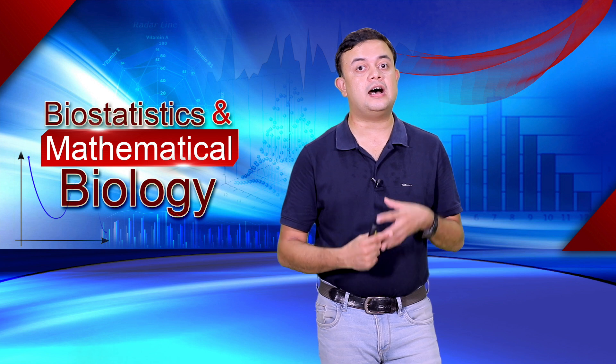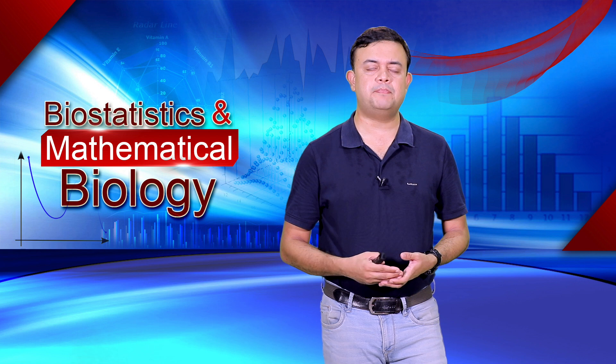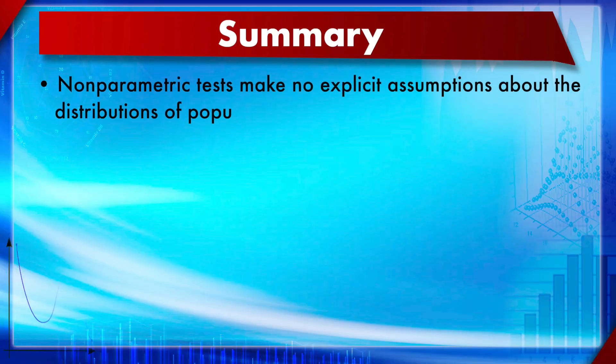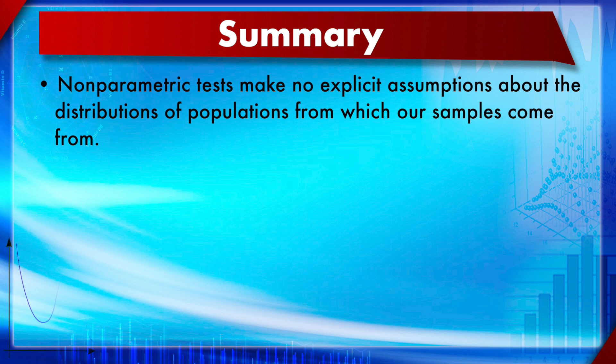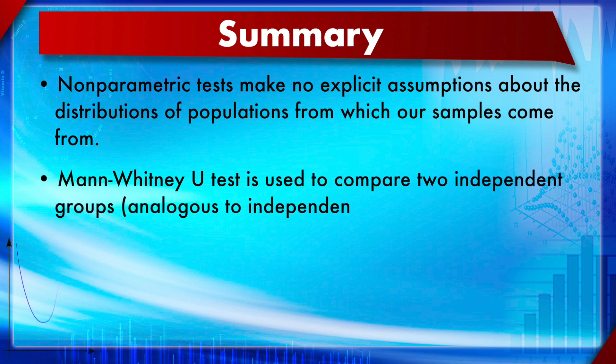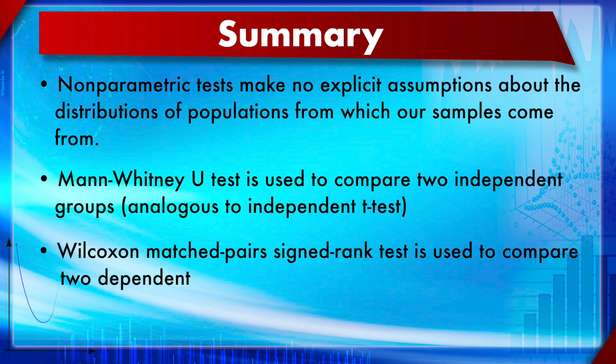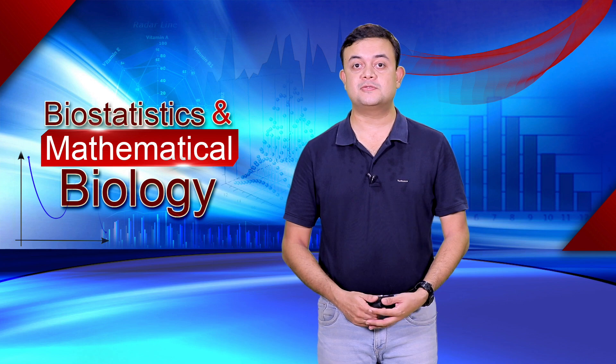The interpretation is exactly like the Mann-Whitney U test — unlike other tests such as t-tests or chi-square. Simple online calculators are available for this test as well. In summary: non-parametric tests make no explicit assumptions about the distribution of the populations. The Mann-Whitney U test is used to compare two independent groups, analogous to the independent t-test. The Wilcoxon matched pairs sign rank test is used to compare two dependent groups, analogous to the paired t-test.